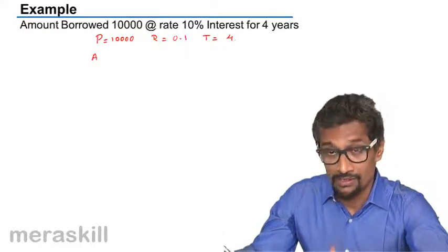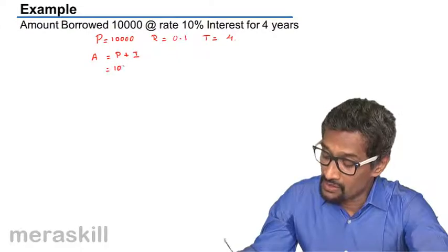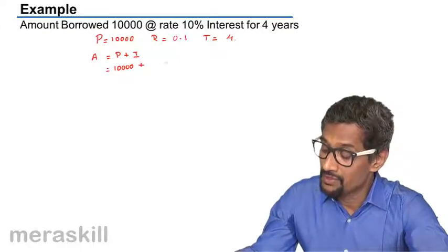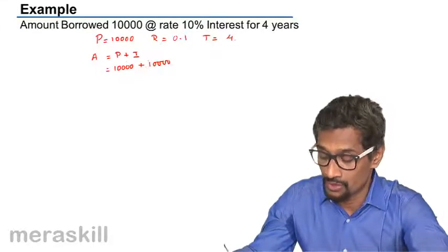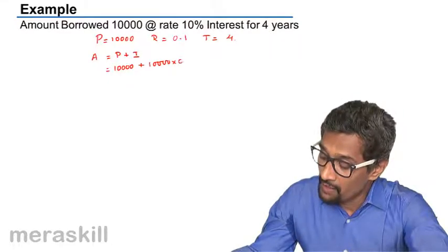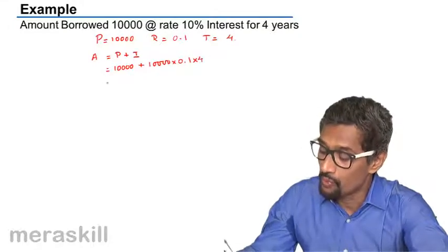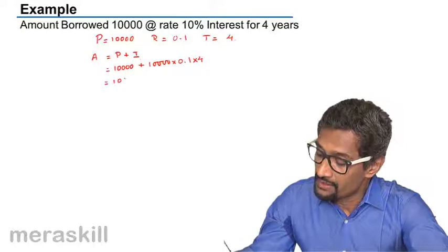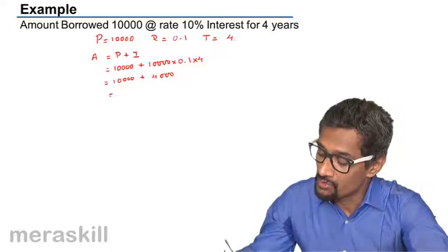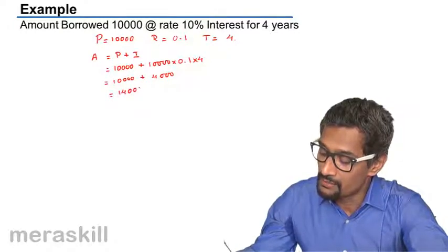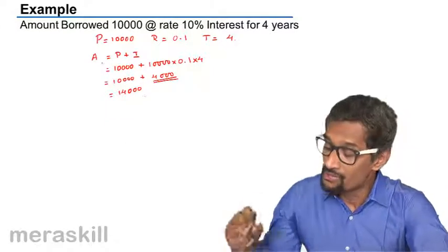So the amount is nothing but principal plus the interest. It would be principal is 10,000 plus interest is going to be the amount on this principal. One year, he has to pay 0.1 but this is for four years. So into four. It's going to be 10,000 plus 4,000. So it turns out to be 14,000 is the amount while the interest is 4,000. Thus, we have the amount here.